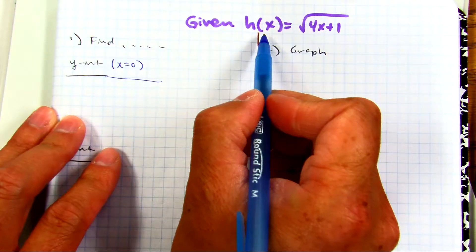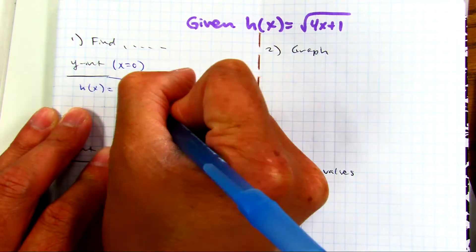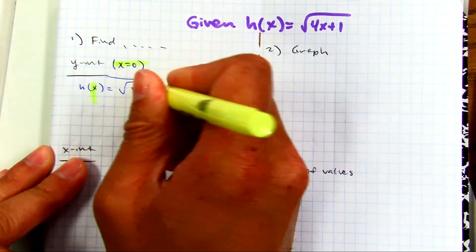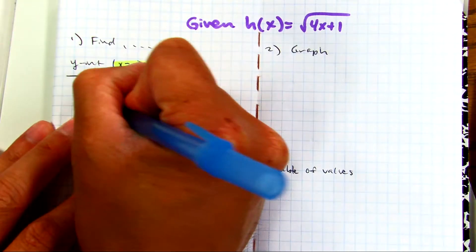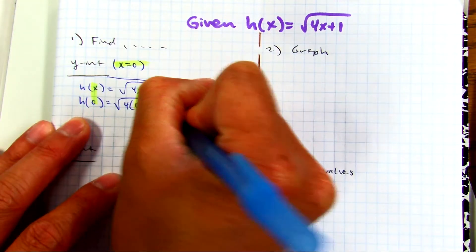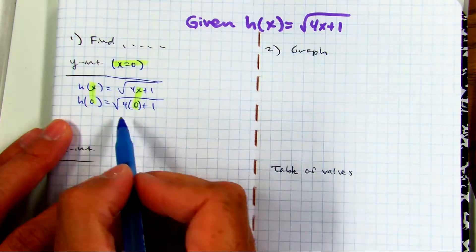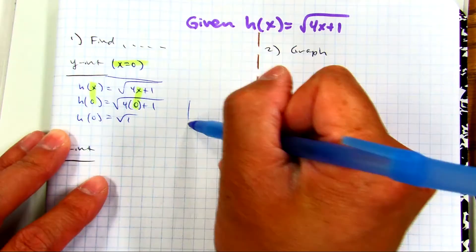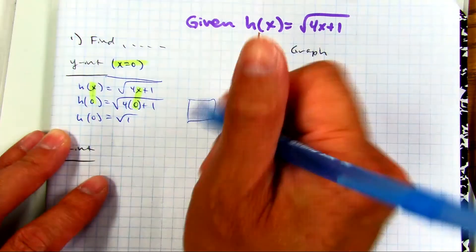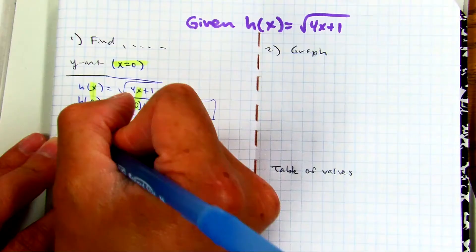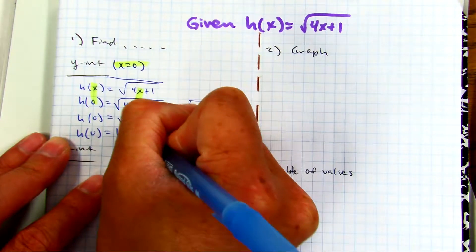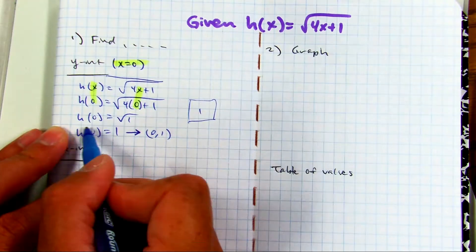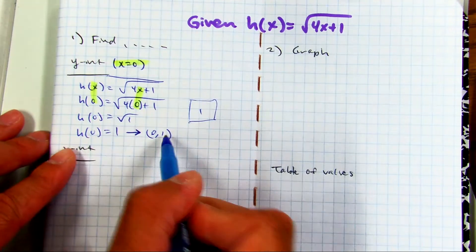Everyone say 'original.' Let's write the original. We're going to make x equals zero. H of zero equals the square root of four times zero plus one. Four times zero is zero, zero plus one is one. The square root of one — two numbers that multiply to equal one — it's one. So h of zero equals one, which is the ordered pair zero comma one. This is your x value, and essentially y equals one. Raise your hand if you got that.